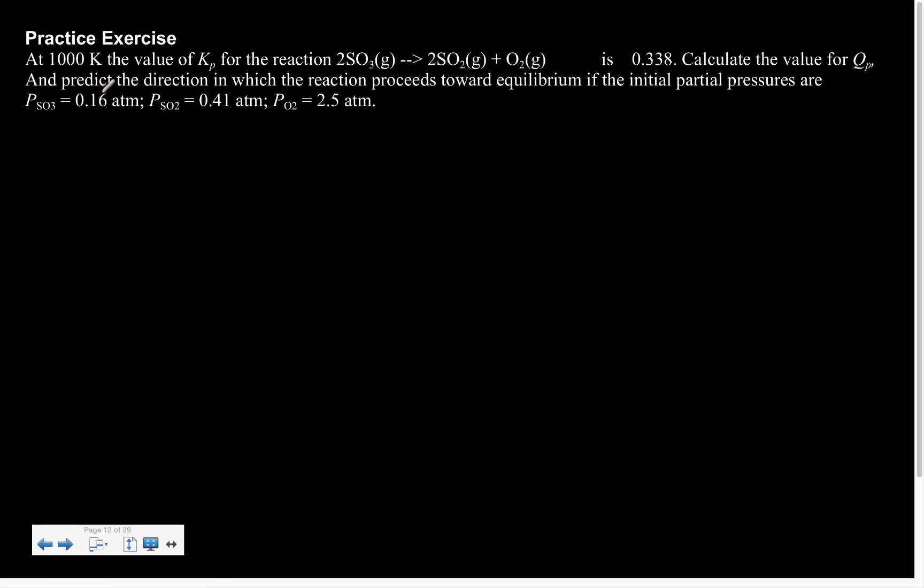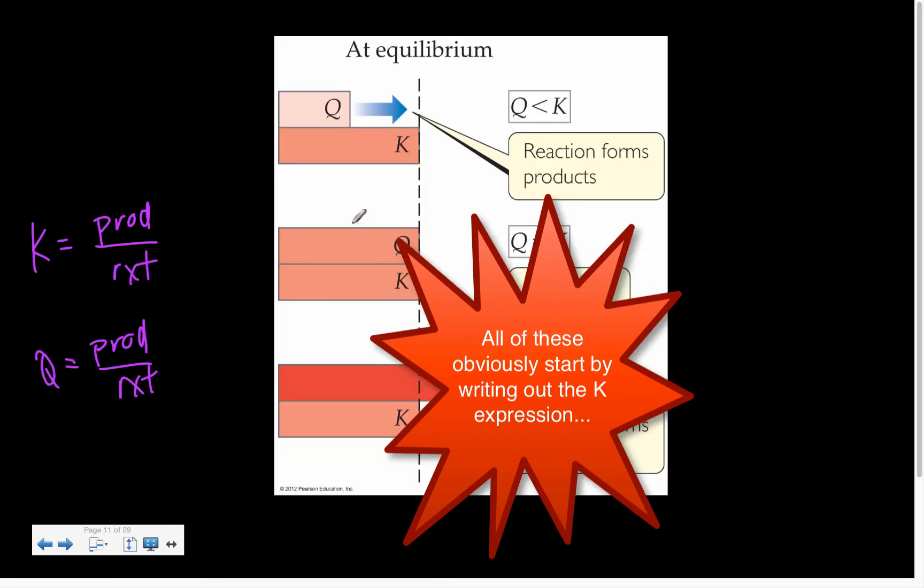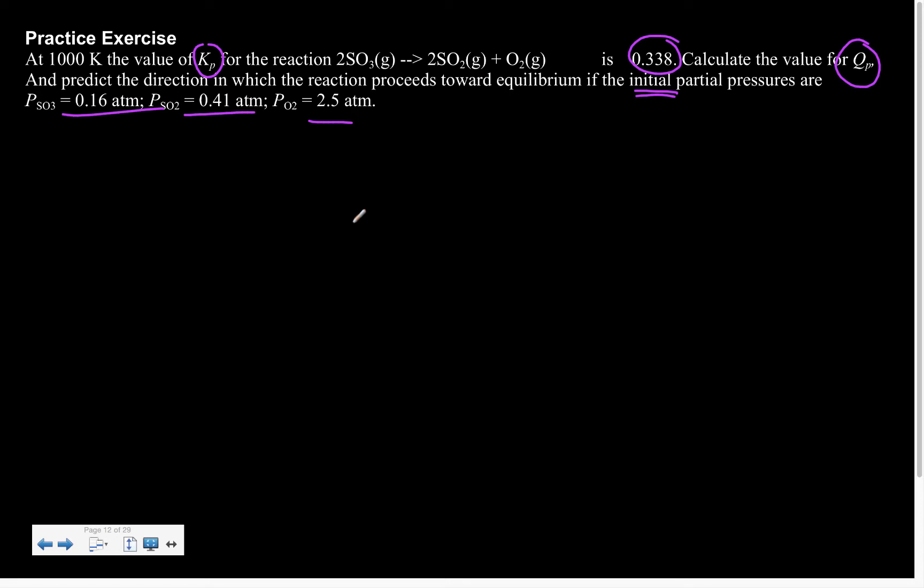Next up, practice problem. So here it says we want to at blah blah, the value of Kp is this. Calculate the value for Q and predict the direction if the initial partial pressure is. So initial is the keyword with all of this. So I would plug them into my Q expression, and then like I did on the previous page, I would compare my Q versus my K.